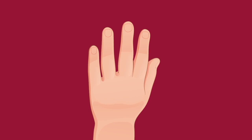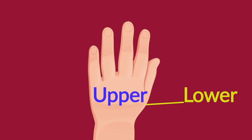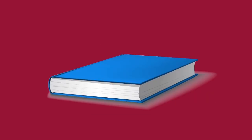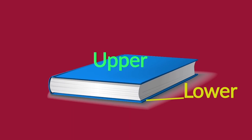Tanisha, do you know which side of the hen you are looking at? Yes, I know — it is the upper side. And which side of the hen you cannot see? It is the lower side. Tanisha, please tell me: the side of the book which you cannot see? It is the lower side. The side of the book which you can see? It is the upper side.